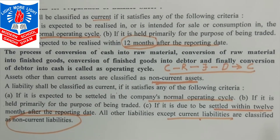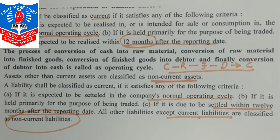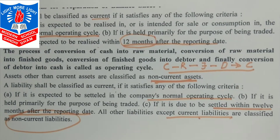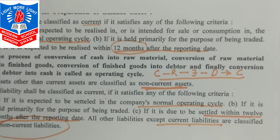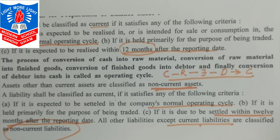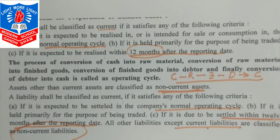In short, 12 months के अंदर अगर कोई asset release हो रही है तो current। Same manner, liability 12 months के अंदर settle हो रही है तो current। Other than that it will be known as non-current. So these two terms are now clear to us.